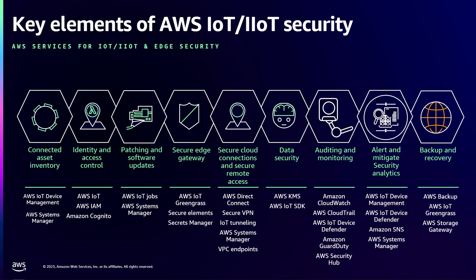There are many other services that AWS offers for security monitoring of IoT and industrial IoT devices. These include services for connected asset inventory, unique identity and access control, patching of devices via AWS IoT Device Management jobs, securing edge gateway credentials, establishing secure connectivity into AWS, secure remote access to on-premises devices, encrypting data at rest and in transit, security monitoring across the attack surface, alerting and mitigation, and backup and recovery of OT and device data on AWS.